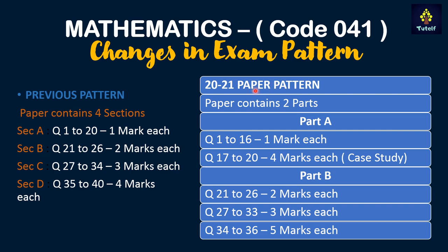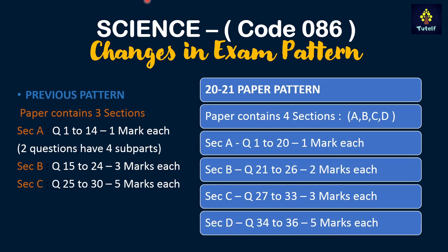According to the latest pattern for 2020-21, the Mathematics paper will contain two parts: Part A and Part B. In Part A, there will be 16 one-mark questions (questions 1 to 16) and one case study of four marks (questions 17 to 20). In Part B, questions 21 to 26 carry two marks each, questions 27 to 33 carry three marks each, and questions 34 to 36 carry five marks each.